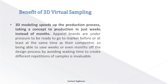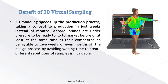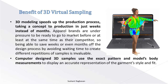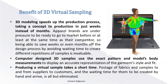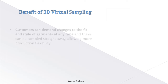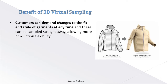3D modeling speeds up the production process, taking a concept to production in just weeks instead of months. Apparel brands are under pressure to be ready to go to market before, or at least at the same time as, their competitors. Being able to save weeks or even months of the design process by avoiding waiting time to create different repetitions of samples is invaluable. Computer-designed 3D samples use the exact pattern and model's body measurements to display an accurate representation of the garment's style and fit. Producing a virtual sample takes a short time, and postage of fabrics and samples to and from suppliers is all but eliminated. Customers can demand changes to the fit and style of garments at any time and this can be sampled straight away, allowing more production flexibility.